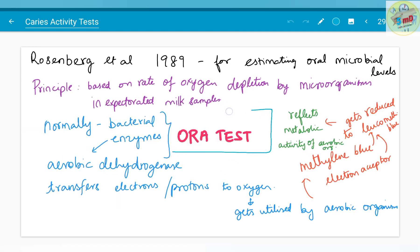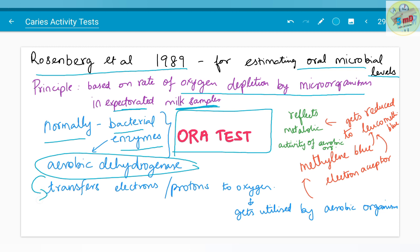The final test: aura test, given by Rosenberg et al in 1989 for estimating the oral microbial levels. The principle is that based on the rate of oxygen depletion by microorganisms in expectorated milk samples. To note here, normally the bacterial enzymes have aerobic dehydrogenase enzyme. This enzyme transfers electrons or protons to oxygen.